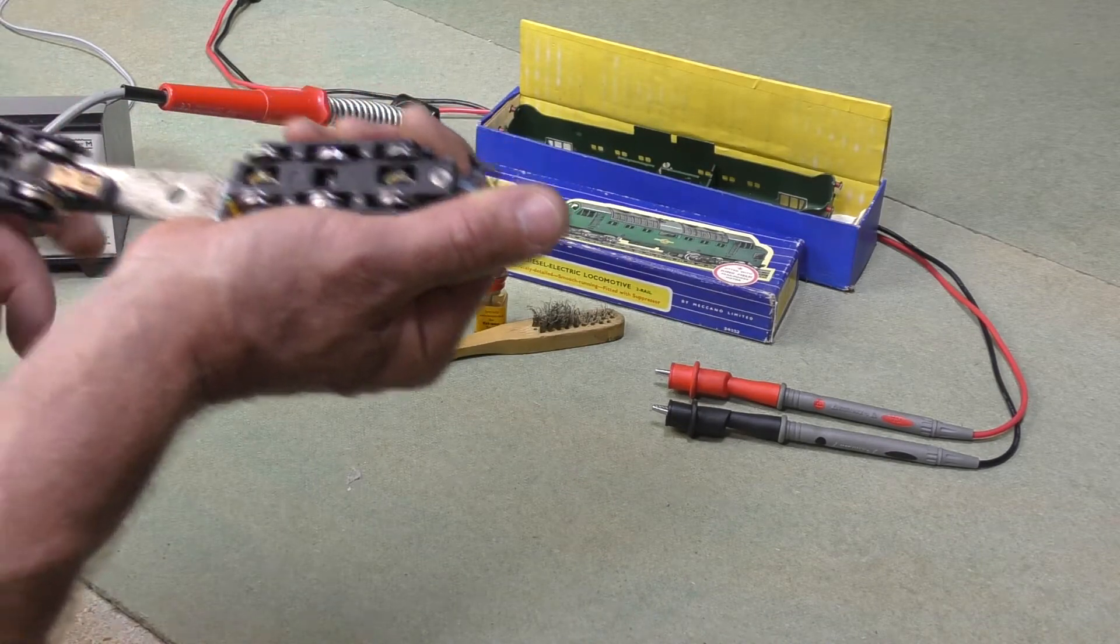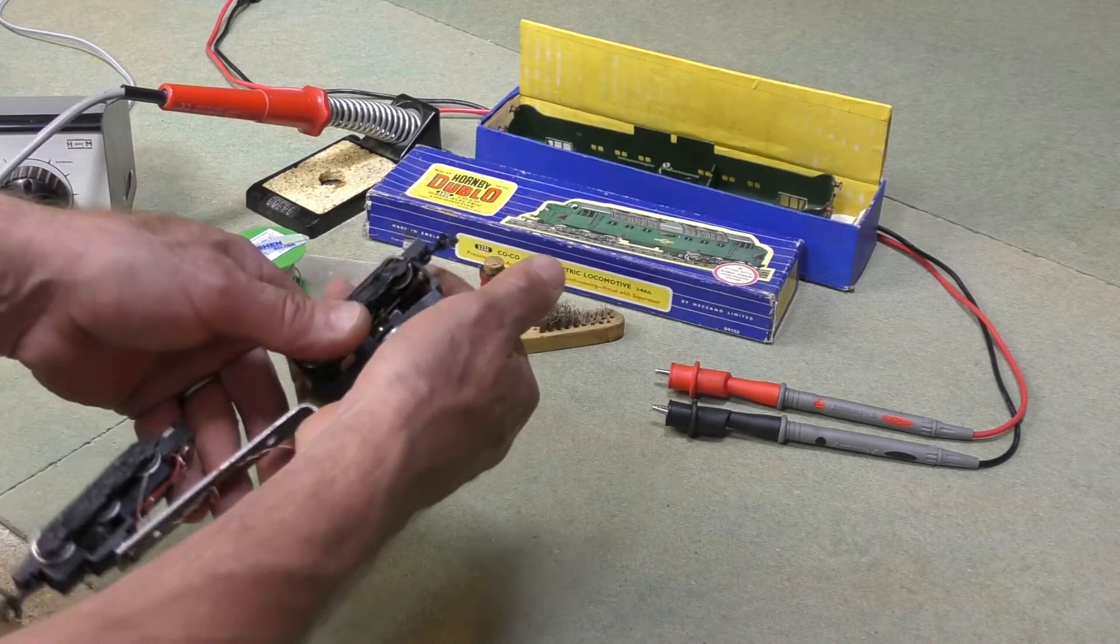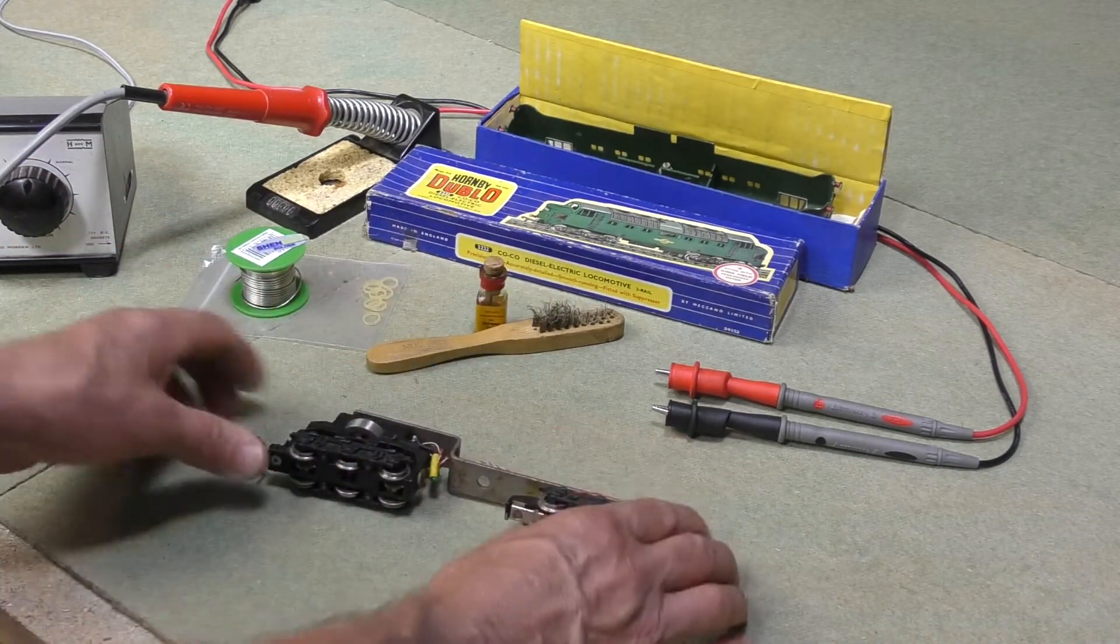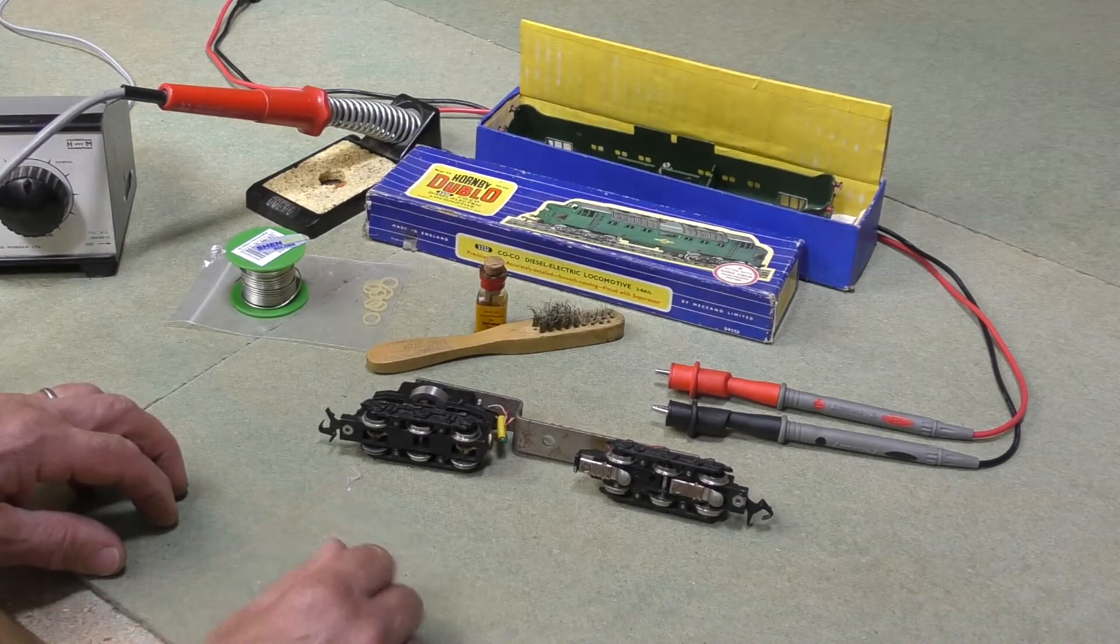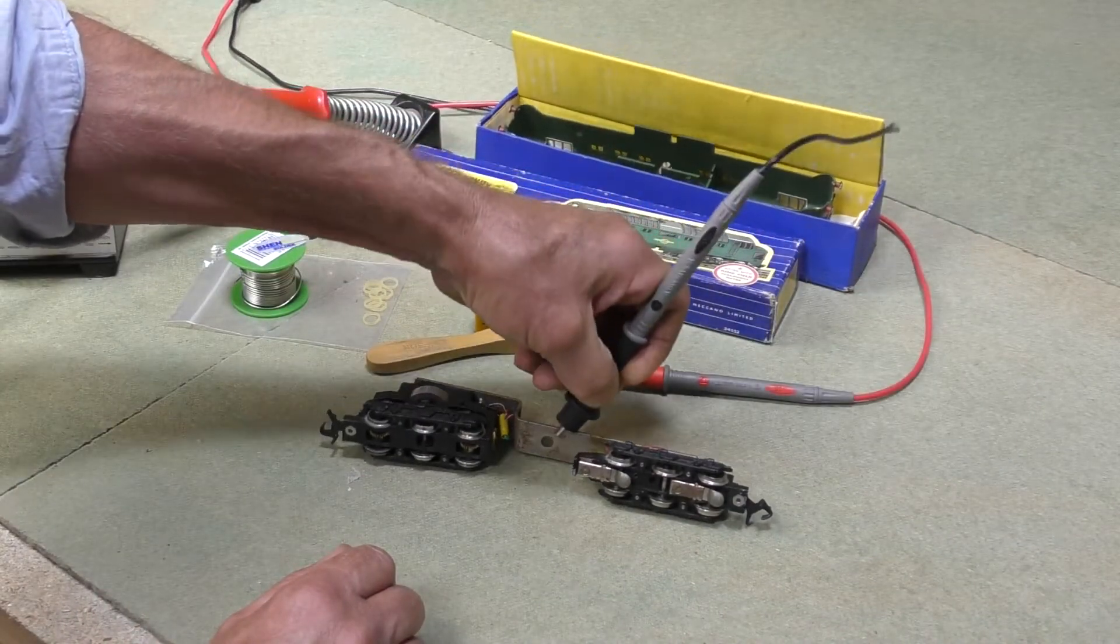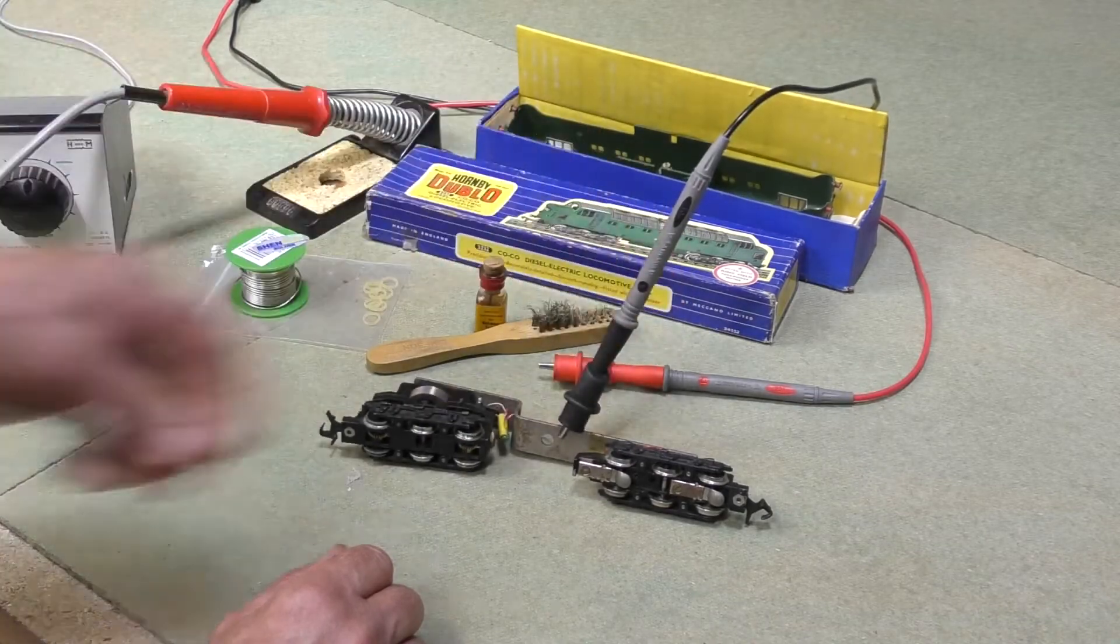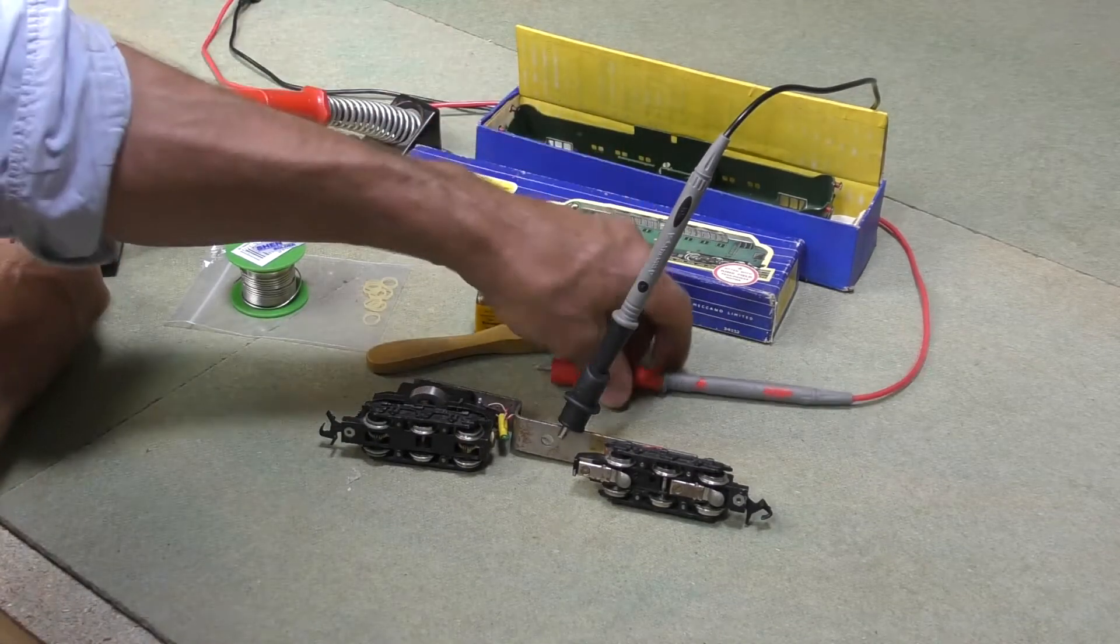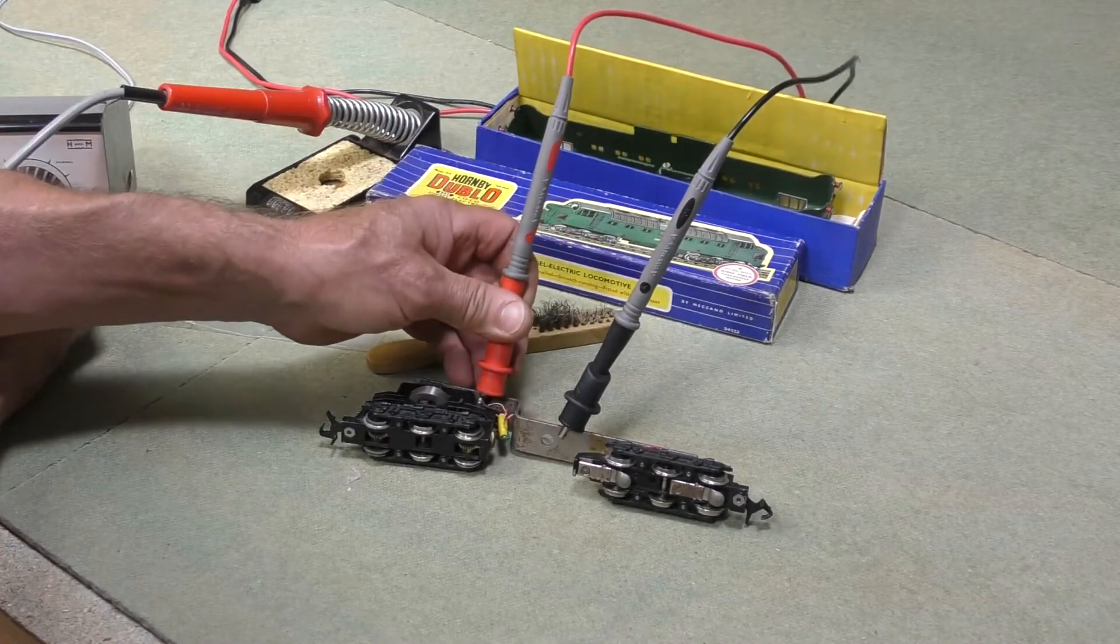That's going to be the main thing. What we need to do firstly is just check that there's some life in it, because I don't really want to spend too much time. So let's get some crocodile clips - we've got some power - and just see whether we can coax something from the motor.